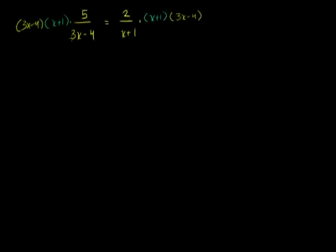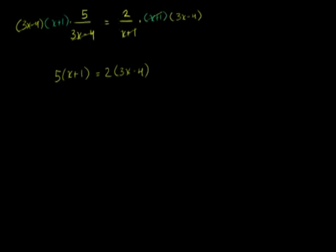This 3x minus 4 cancels with this 3x minus 4. So the left-hand side is just 5 times x plus 1. And on the right-hand side, this x plus 1 cancels with that x plus 1, leaving 2 times 3x minus 4. If you look at it, it looks like we did something called cross-multiplying: 5 times x plus 1 equals 2 times 3x minus 4.